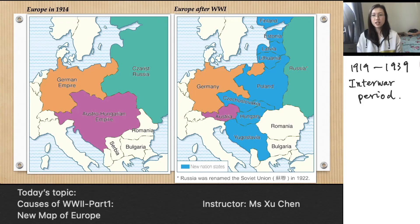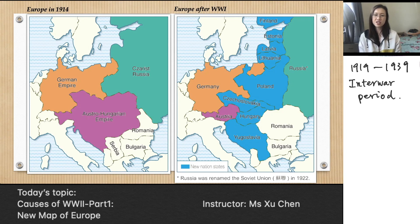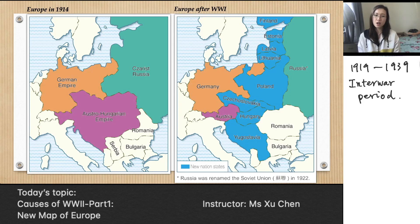For the first question: before the Austro-Hungarian Empire, what we had was the Austrian Empire. Hungarians were just one of the ethnic groups in the Austrian Empire, but because they became more and more influential in the empire, it finally changed its name to the Austro-Hungarian Empire. This is why Austria counts as an old nation-state while Hungary counts as a new nation-state.